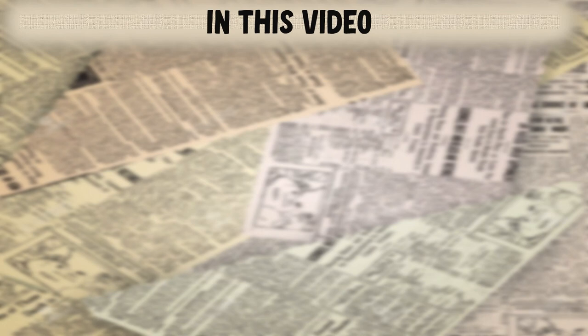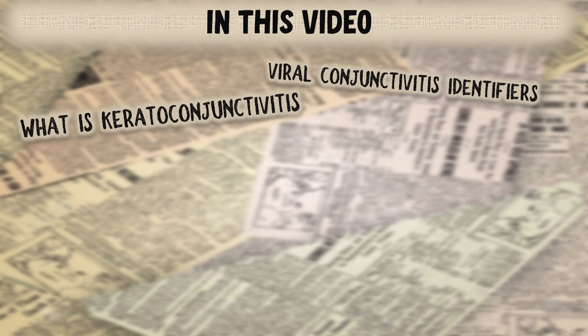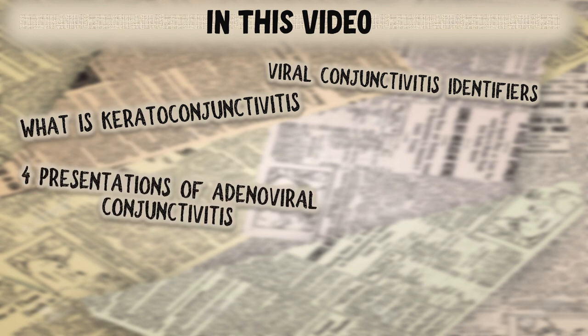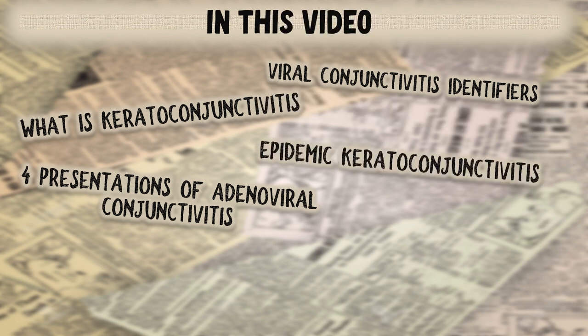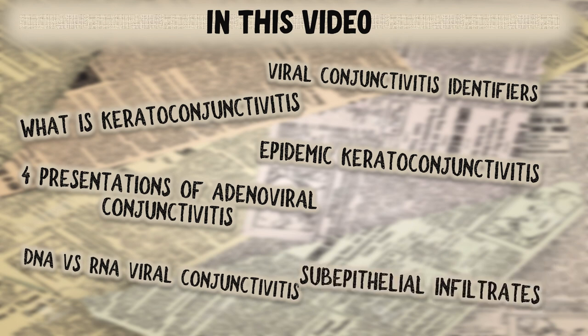In this video, we shall be studying about what is keratoconjunctivitis, how do we identify that a particular conjunctivitis is of viral etiology, what are the four main presentations of adenoviral conjunctivitis including epidemic keratoconjunctivitis and pharyngoconjunctival fever, what are DNA versus RNA viruses which cause conjunctivitis, and basically what is meant by sub-epithelial infiltrates.